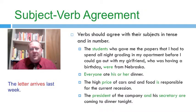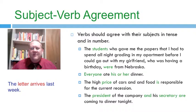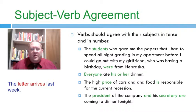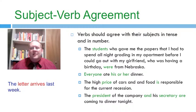Most people know this instinctively. Most people understand that you don't say 'he are here.' You don't mix a subject that is singular with a verb that is plural. But there are some situations that can get in our way. The first occurs when there are a lot of words in between the subject and the verb, as in: 'The students who gave me the papers that I had to spend all night grading in my apartment before I could go out with my girlfriend who was having a birthday were from Nebraska.' Between 'students' and 'were,' there's a lot of real estate, and it's very easy to pick one of these other nouns and coordinate the verb with the wrong subject. The more words between the subject and the verb, the more likely we are to commit errors in agreement.